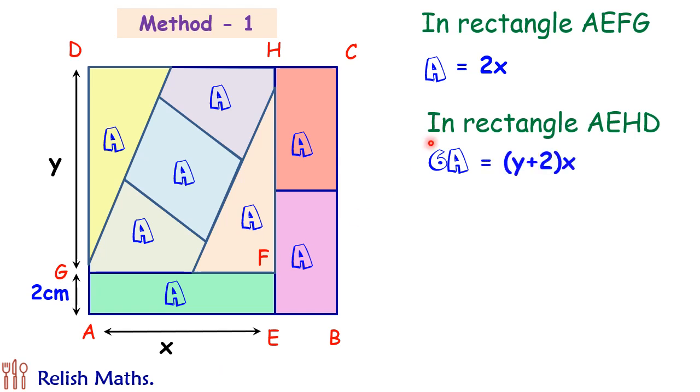Putting the value of A from the top, so we will get 6 into 2x equals (y + 2) into x. x will get cancelled out and we will get y as 10.